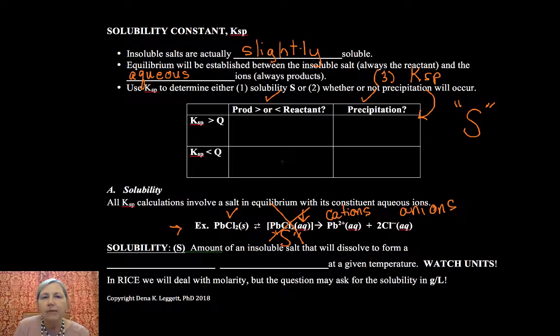Now for this second one, whether or not a precipitation will occur, what we're going to be doing is comparing K to Q. So if K is greater than Q, that means for our starting amount measured by Q, remember we have our reactants are greater than our products, and so that means we're going to shift to make more product and no precipitation will occur when K is greater than Q.